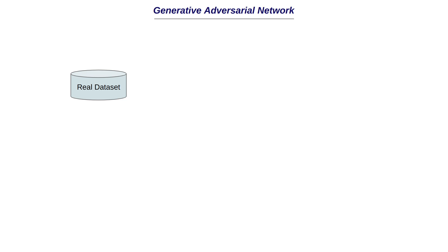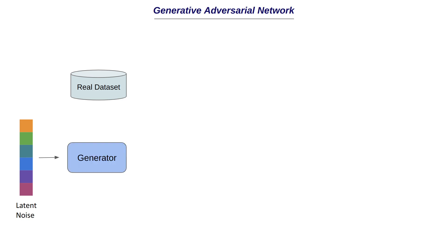Now let's understand this in more detail. We start with a real dataset containing images we want to replicate. The generator should produce images similar to this. We start with a latent noise — essentially an array of numbers — which is passed to the generator and used as pixel values to generate an image. For example, an array of 100 values is passed to the generator, which builds an image of 224x224 pixels from this latent noise. The latent noise array is typically sampled from a normal distribution.